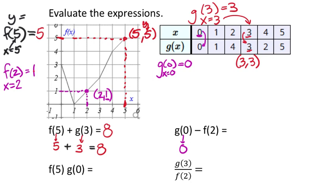Which, again, this would be the ordered pair 2, 1. So f of 2 is 1. So here in our original expression, g of 0 minus f of 2, I now have 0 minus 1. Which, if you need the calculator to do that, don't feel ashamed. But it should be negative 1.